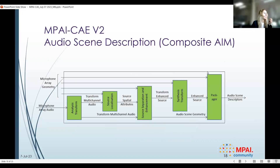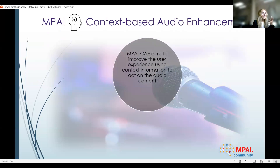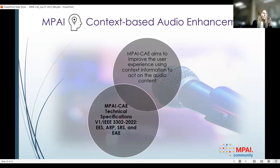I would like to close my overview by mentioning that we also have a version two, which includes the addition of the audio scene description — an improved version in the form of what is considered a composite AIM. The idea behind MPAI-CHI is to improve the user experience by using information about the environment to act upon the audio content. In technical specification version one, we have four use cases: emotion-enhanced speech, audio recording preservation, restoration system, and enhanced audio conference experience.